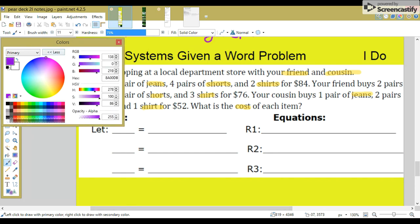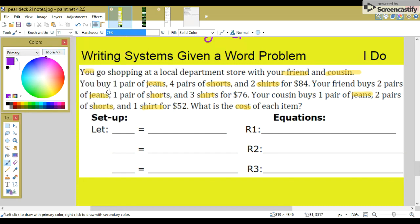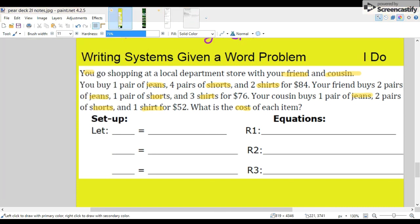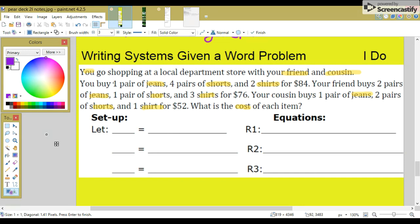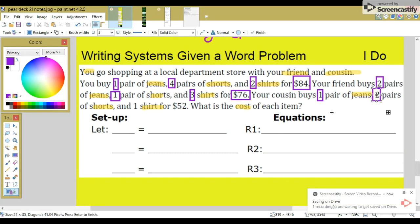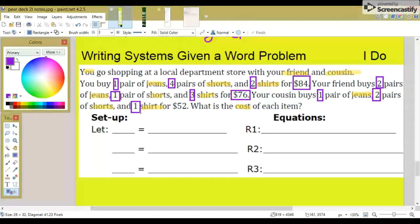Next, let's box the numbers. So, it's one pair of jeans, four pairs of shorts, two shirts, $84. Two jeans, one short, three shirts, $76. And then we have one jeans, two shorts, and one shirt for $52.